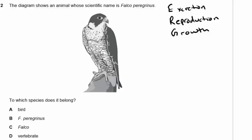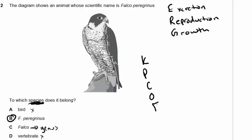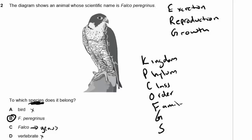Question 2: The diagram shows an animal whose scientific name is Falco peregrinus. To which species does it belong? Is it a bird, F. peregrinus, Falco, or a vertebrate? A species is specific. Falco is the genus. Using the mnemonic 'King Philip Came Over For Great Soup' — Kingdom, Phylum, Class, Order, Family, Genus, Species — Falco is genus and peregrinus is species, so F. peregrinus is the answer.